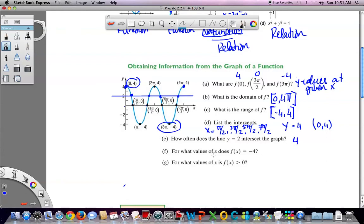For what values of x does f of x equal negative four? So this is the y value. So where do you get negative four? Well, you get negative four here and there. So the x values are π and 3π.